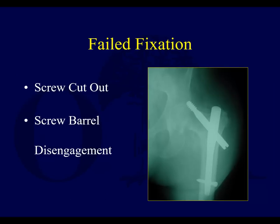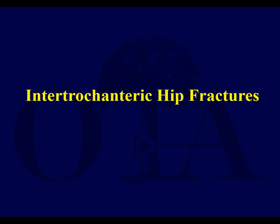Failed fixation can occur due to screw cutout or screw-barrel disengagement — where the screw pulls out of the barrel and loses fixation. Disengagement is fairly uncommon if the lag screw extends far enough into the barrel. Cutout does happen, and this is where tip apex distance matters: if you achieve a deep, center-center position of the screw in the femoral head, hopefully you can avoid it. Cutout is a disaster when it occurs.